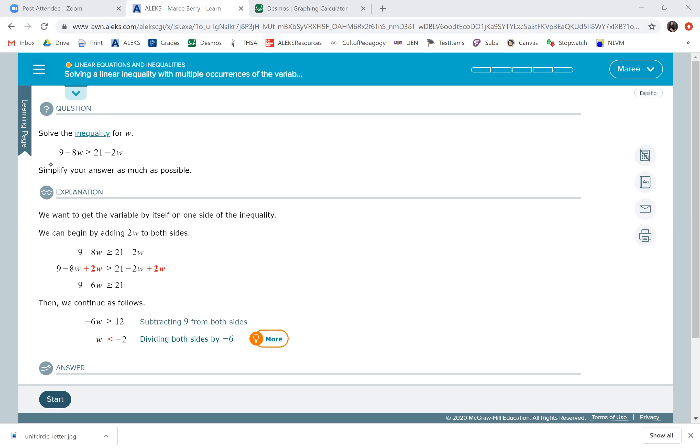So on this example, you have W's on both sides. Please remember that if you have variables on both sides, you have to add or subtract the entire term to move it over. They chose in their example to add 2W to both sides, so it comes off this side and you have 21 here, then you have 9 minus 6W. Then you're going to subtract 9, and when you divide by negative 6, notice they switch the sign.